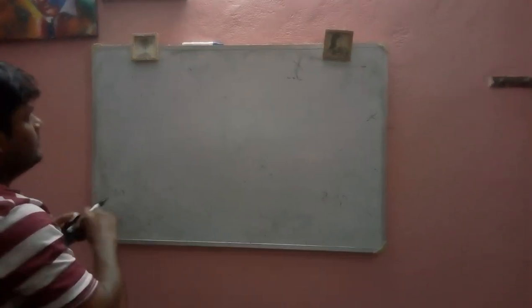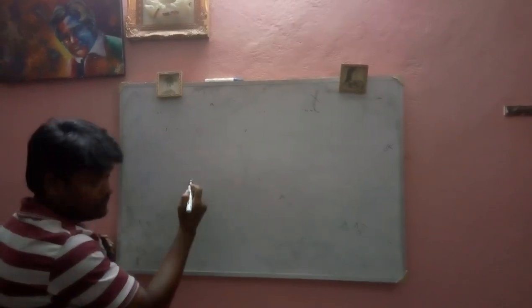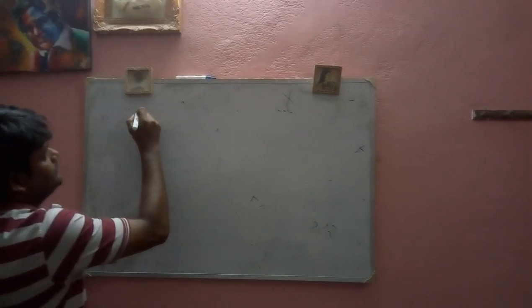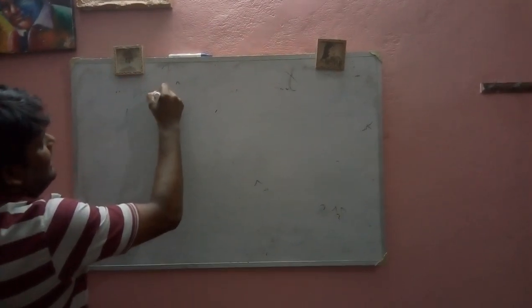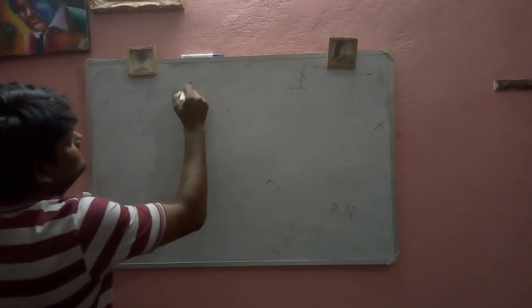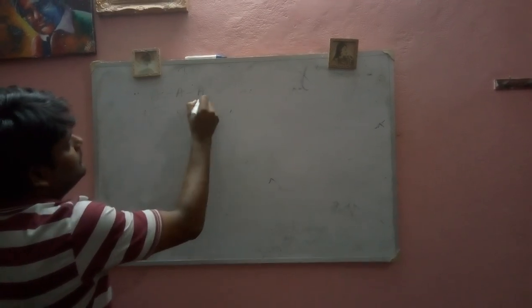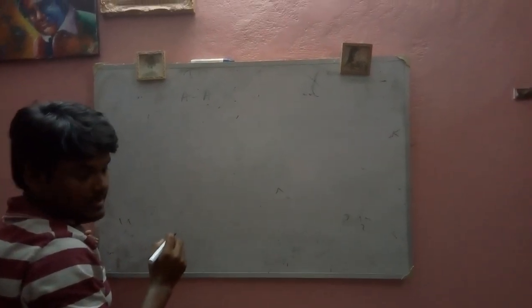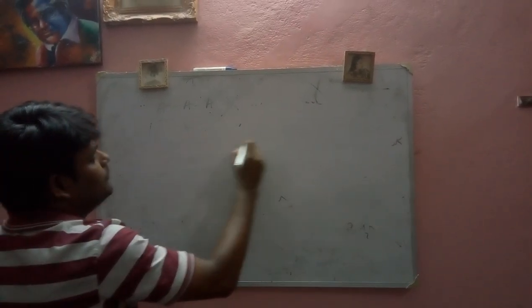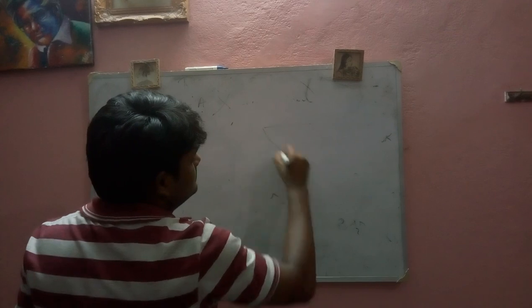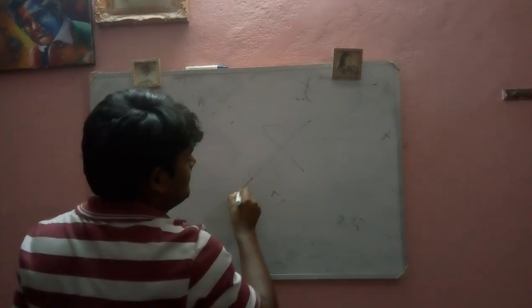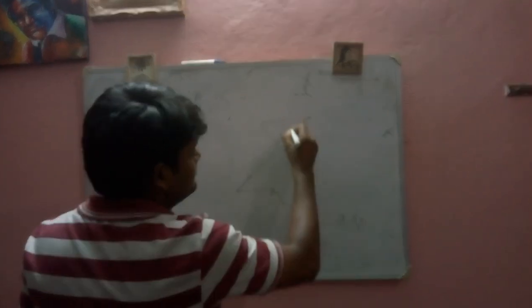We will not use Angle-Angle-Angle for congruency. Why? For any kind of drawing, suppose these two sides are parallel.